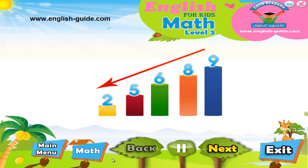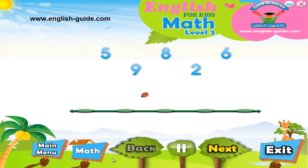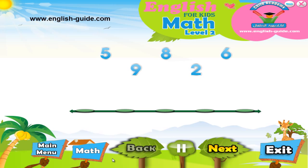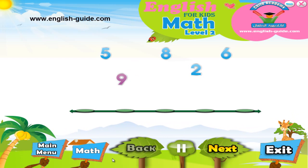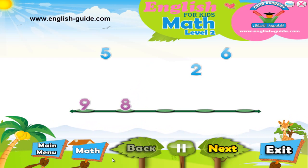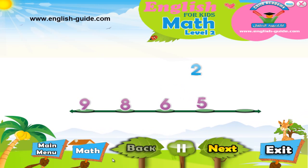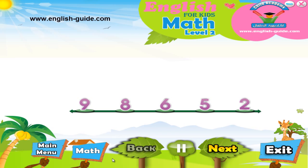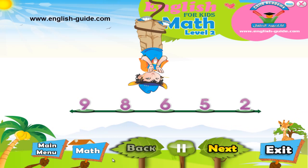For example, if we take the numbers that we have just sorted in ascending order and we try to sort them in descending order, we'll first put the number nine at the beginning of the line. And then after that we'll put the number eight, followed by the number six, then the number five, and finally the number two, because the number two is the smallest number. Brilliant!